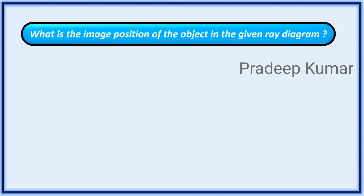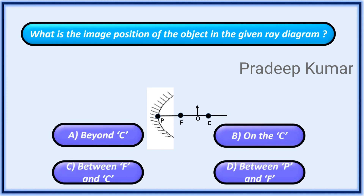What is the image position of the object in the given ray diagram? Options: A. Beyond C, B. On the C, C. Between F and C, D. Between P and F.